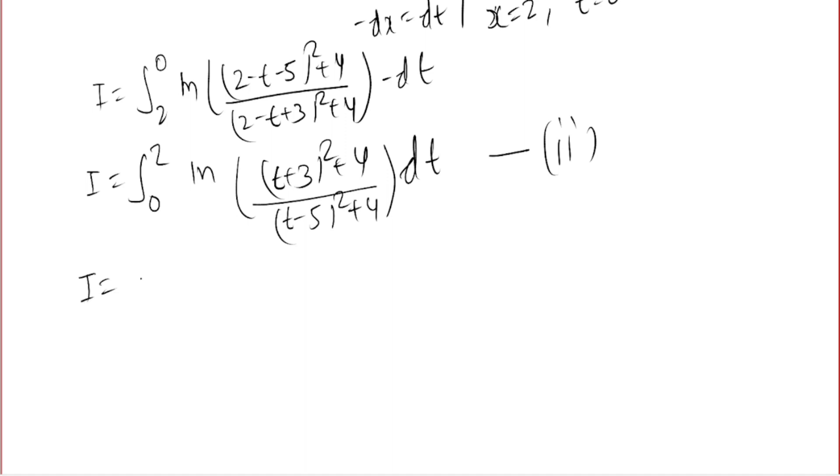Now I can write this as ∫₀² -ln(((t - 5)² + 4)/((t + 3)² + 4))dt, because we know ln(a/b) = -ln(b/a).